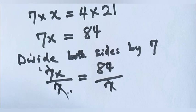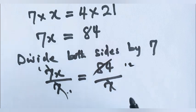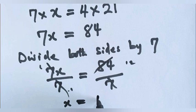When you divide 84 by 7, you have 12. So that means x is equal to 12.